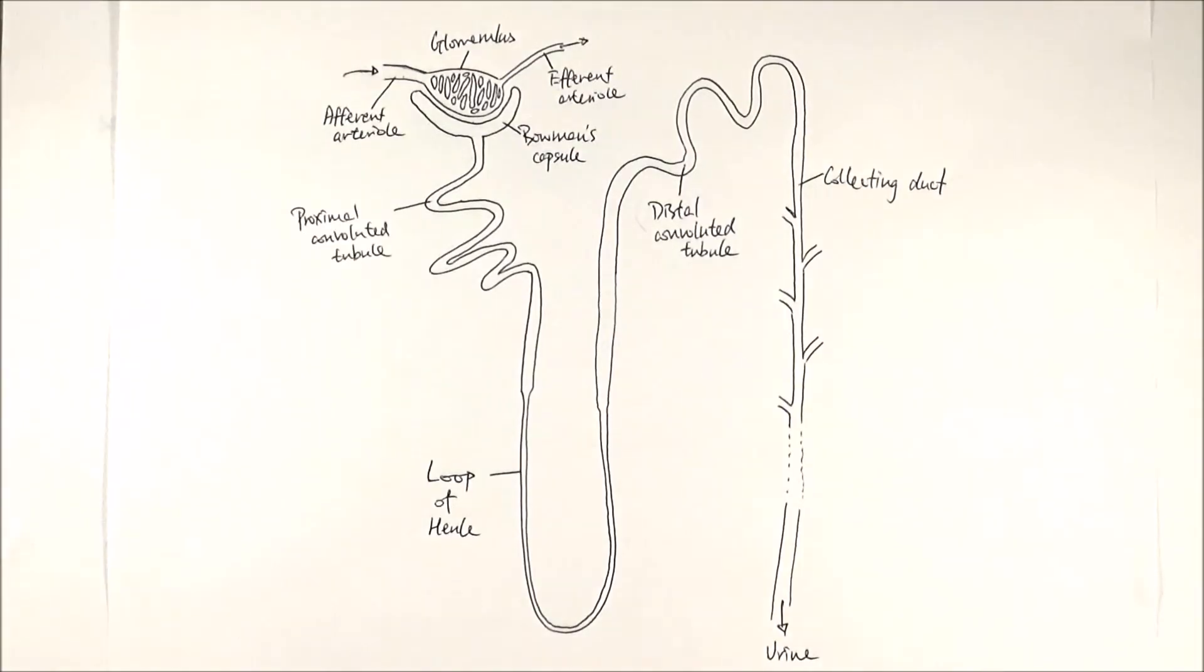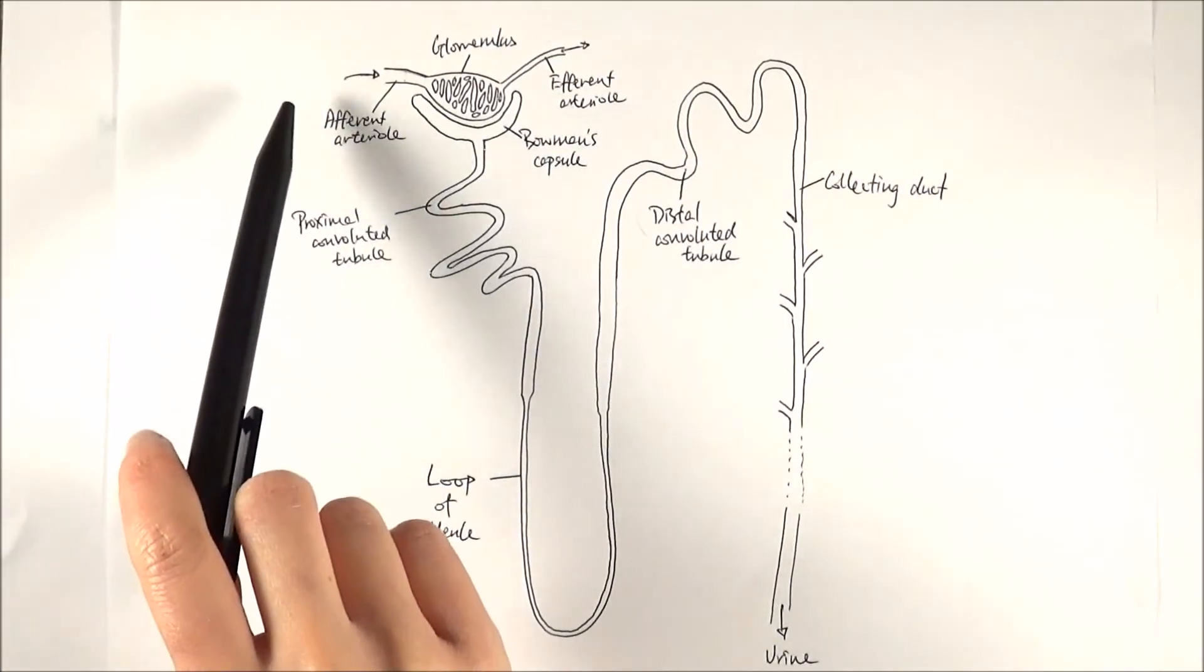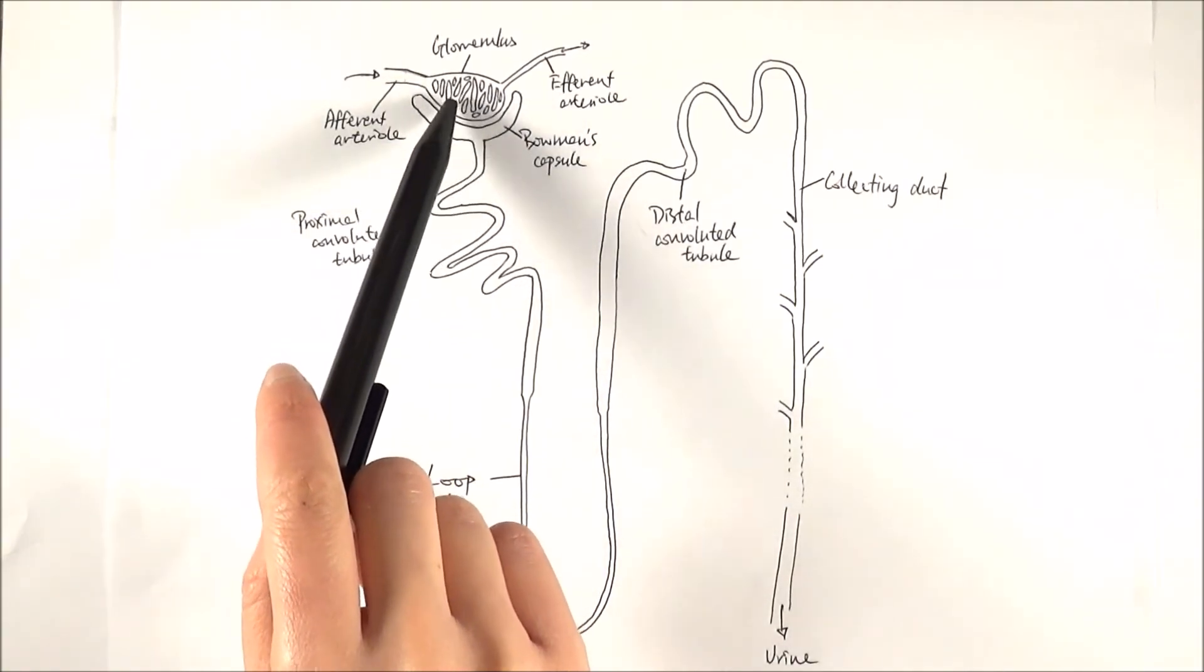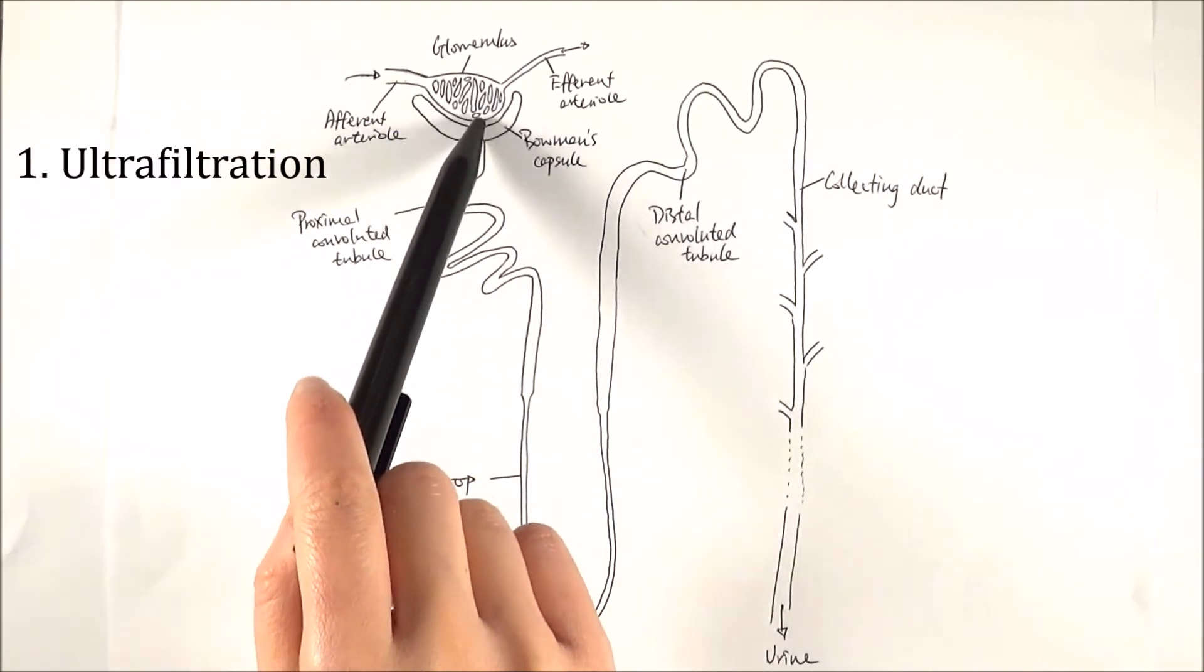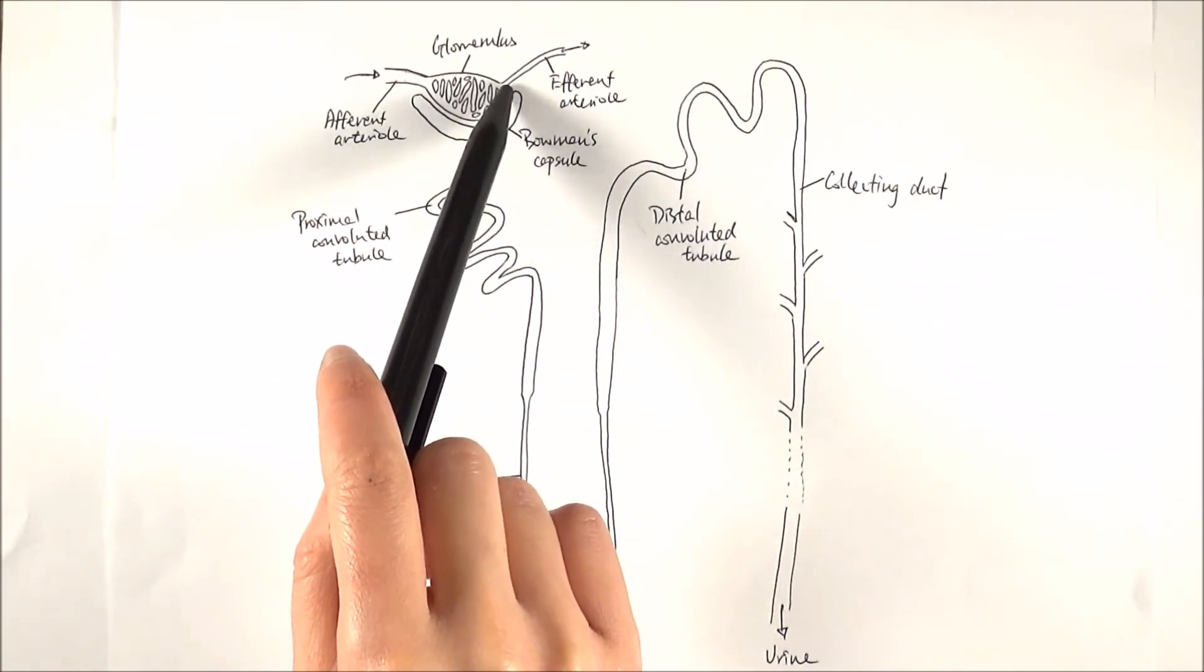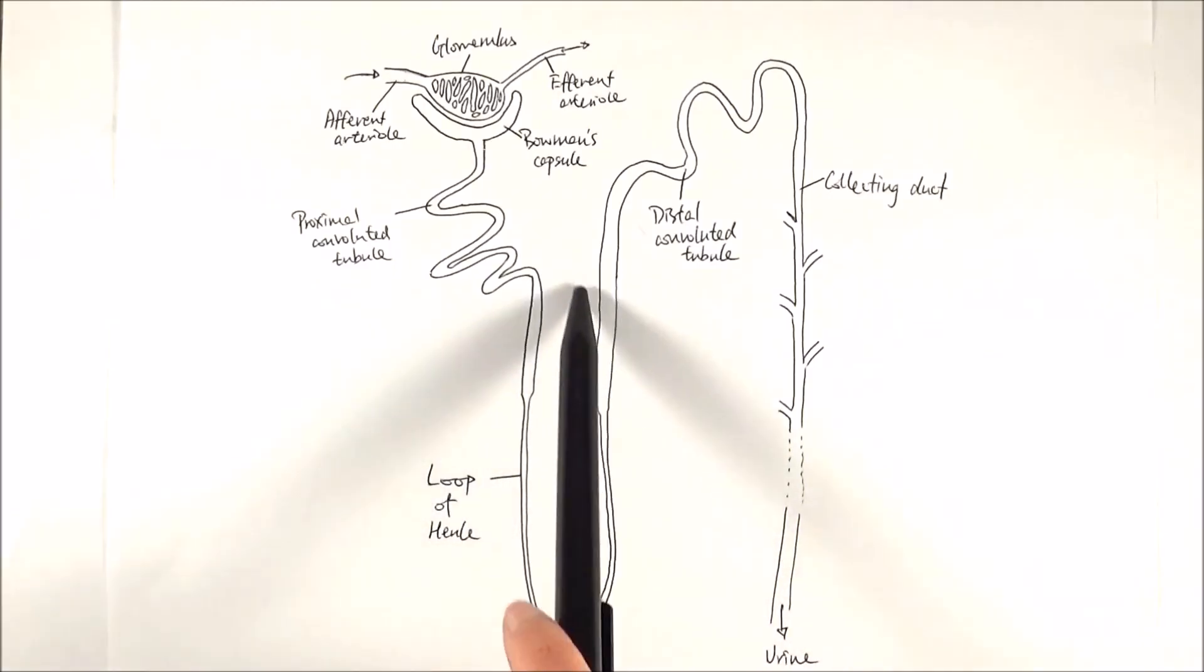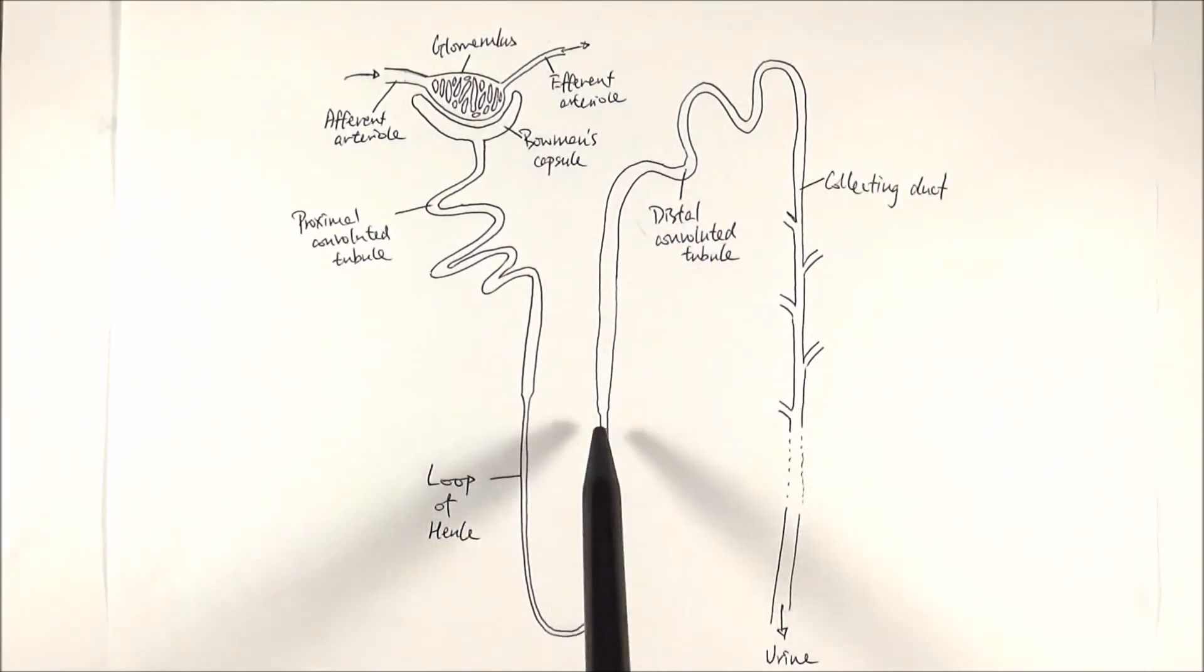And there you have it, this is the structure of the nephron. Blood from the renal artery will enter via the afferent arteriole and it goes into the glomerulus. And then the substances can be filtered out into the Bowman's capsule. The remaining blood will go through the efferent arteriole and it circulates—the capillaries circulate around this entire structure to do selective reabsorption.